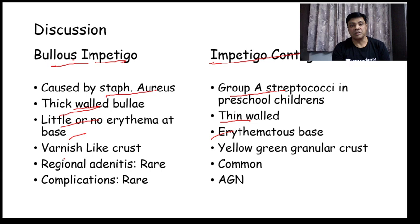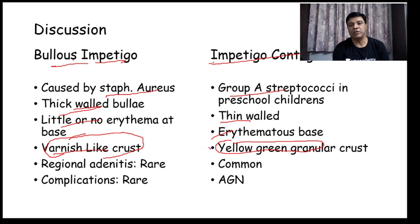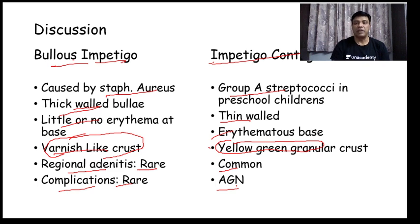There will be little or no erythema at the base in Bullous impetigo, while Impetigo contagiosa will have an erythematous base. The crust in Bullous impetigo is varnish-like, while in Impetigo contagiosa it will be yellow-green granular crust. Regional adenitis is rare in Bullous impetigo.